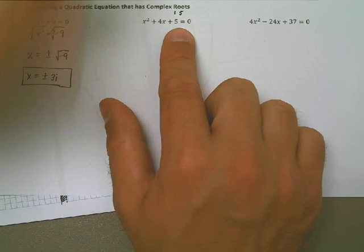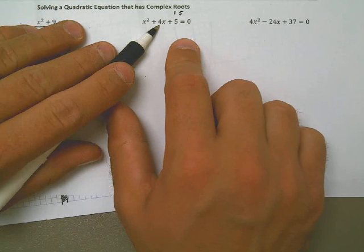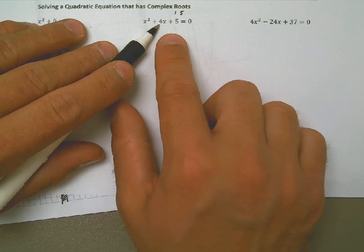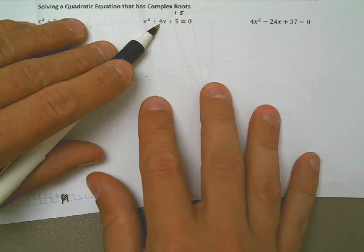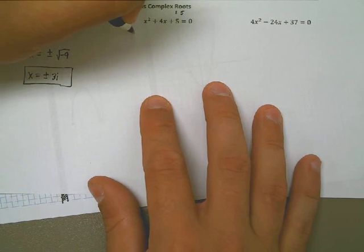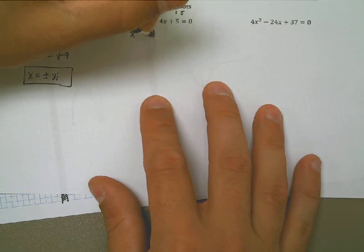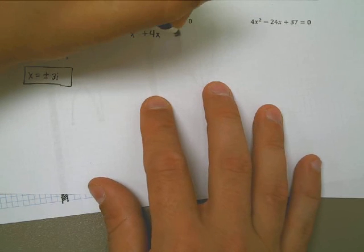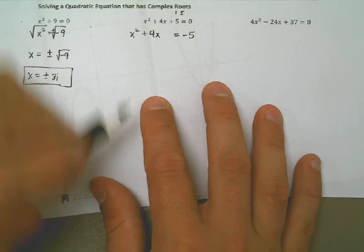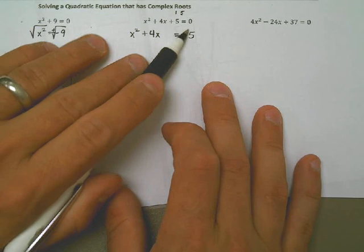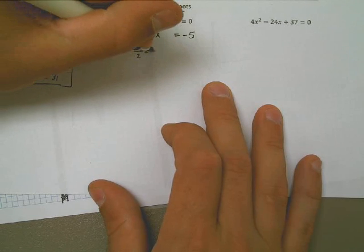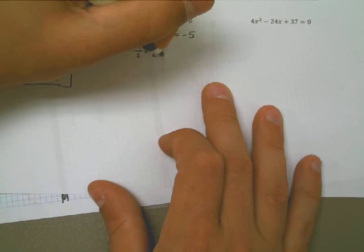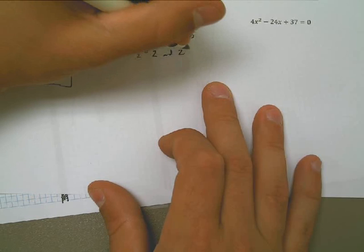So if I wanted to complete the square on this one, I would first move the 5 to the right side by subtracting it from both sides. I would take 4 and divide it by 2, that's 2, and then I would square the 2, and that gives me 4. And so now I know that I can add 4 to both sides. If you don't know what I'm doing right now, you need to go watch the one on completing the square. But I'm going to add 4 to the left, and to be fair, I've got to add 4 to the right.